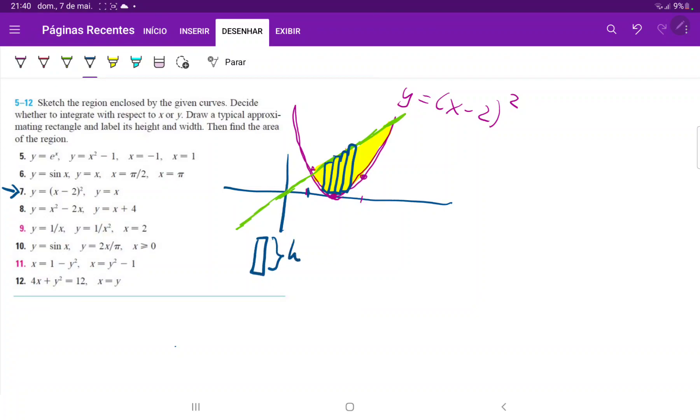So the height is just the upper function minus the lower function, so this is just x minus x minus 2 squared, and then the width is just dx for a little piece of our x axis. We cannot forget the meaning of this because it's very easy to just set up the integral and not actually visualize what it is that you're doing.